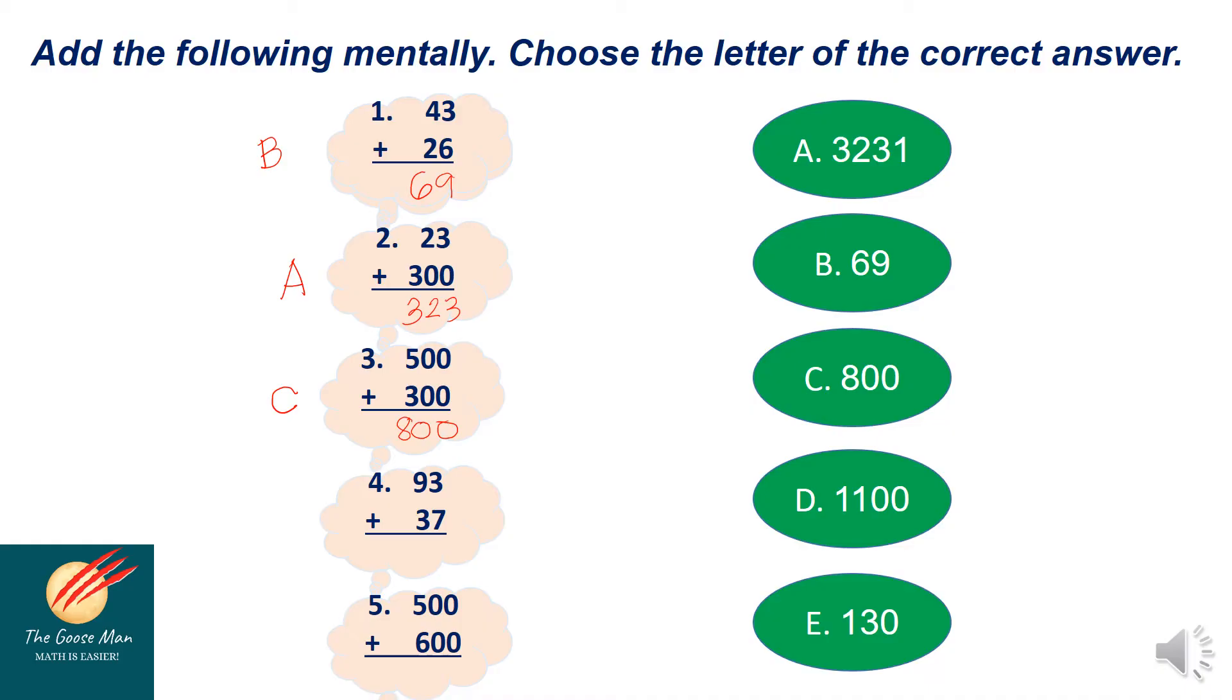Next, number four. 93 plus 37. I'll rename 93 as 90 plus 3. And I'll add 90 plus 30 will give me 120. 3 plus 7 is 10. So 120 plus 10 will give me 130. So the answer is letter E.